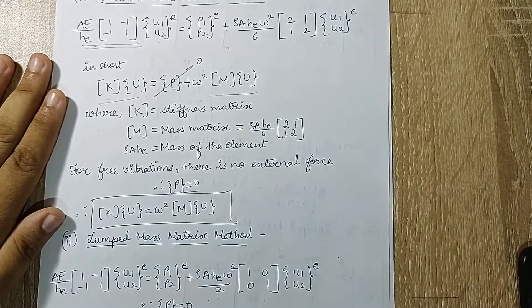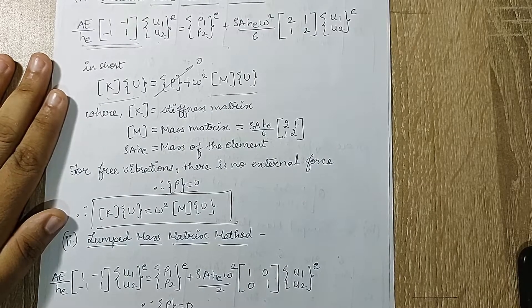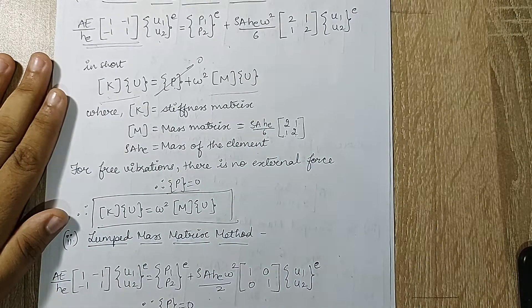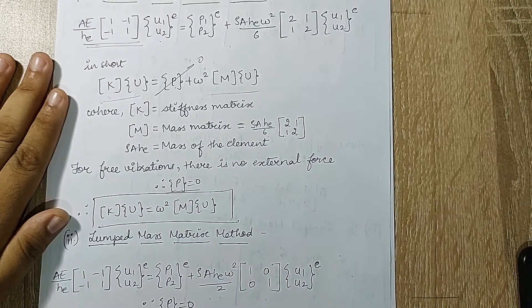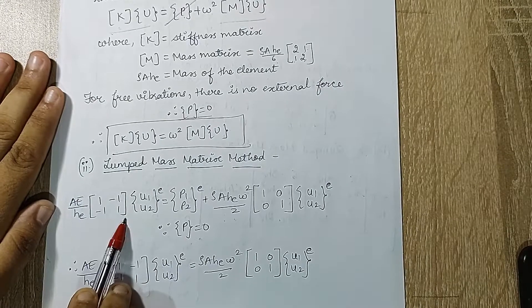So this is my shortened form of equation for consistent mass matrix for axial vibration. Next we will go for lumped mass matrix method. Here the equation is AE upon HE [1, -1; -1, 1] {u1, u2} raised to E.